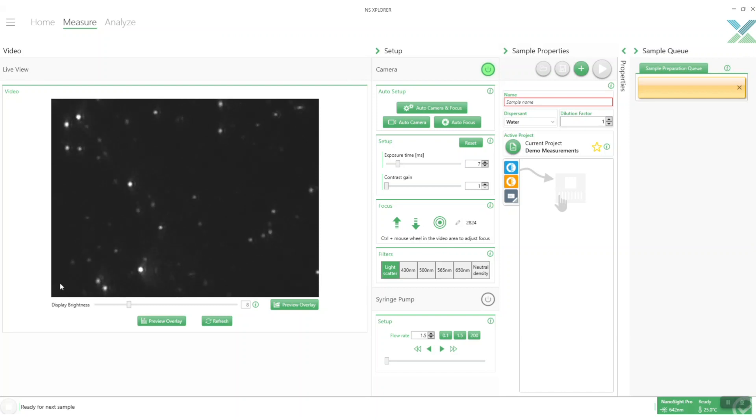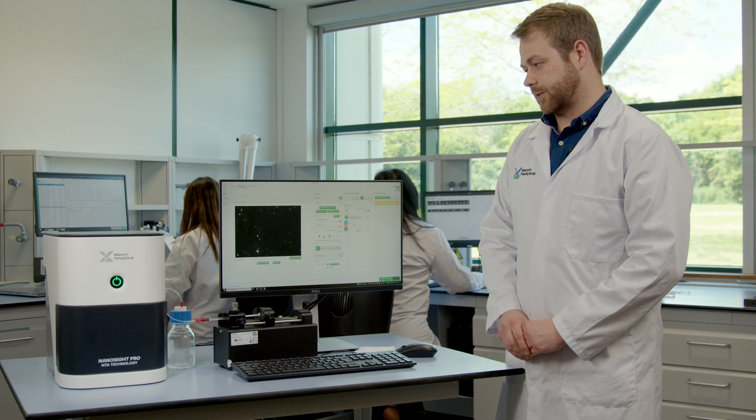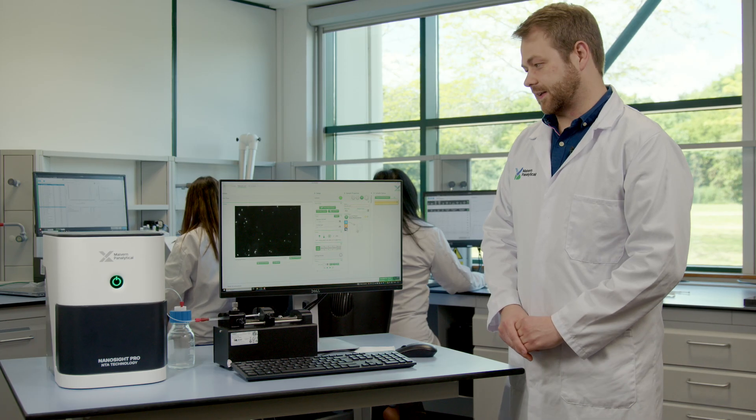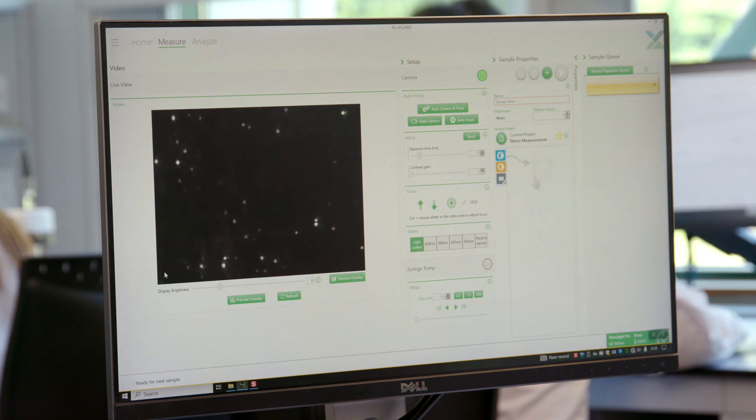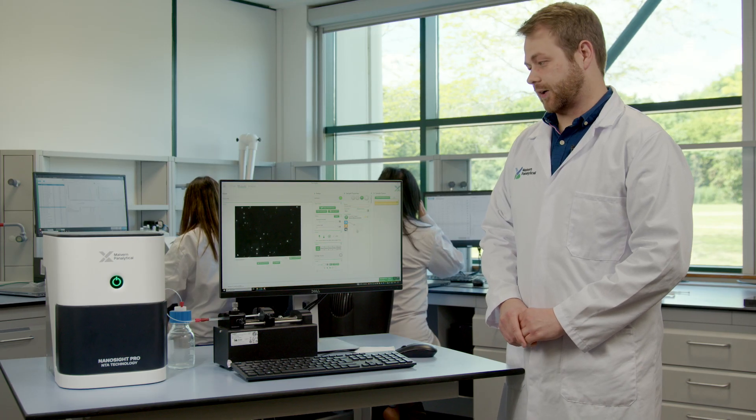They are undergoing Brownian motion which is what's causing them to move around in random movements and each one you can see is various different sizes and this pretty much correlates to what size they are in your sample.